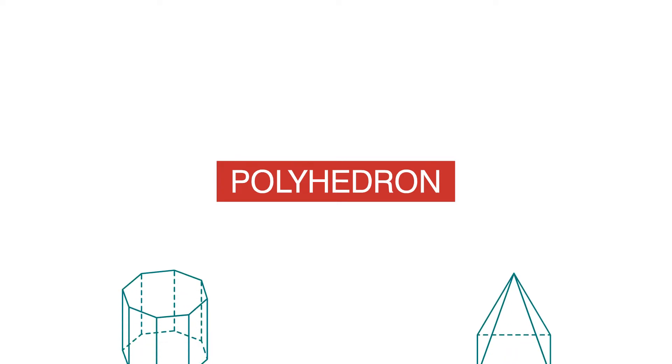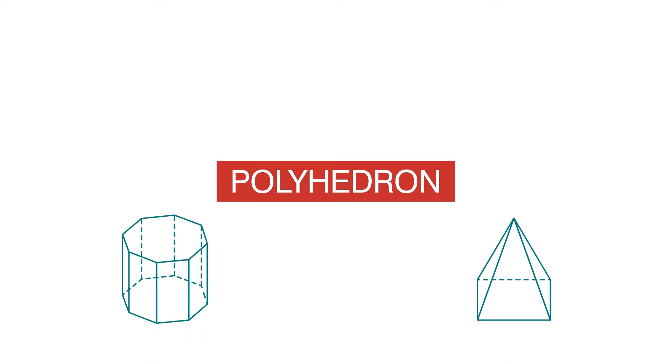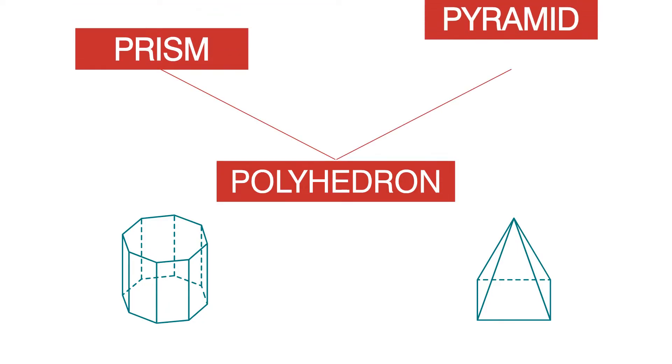Polyhedrons are three-dimensional figures with faces that are polygons. There are two types of polyhedrons: prisms and pyramids.